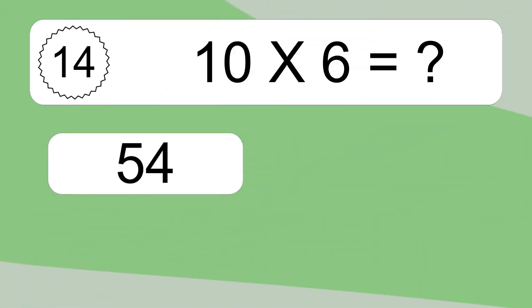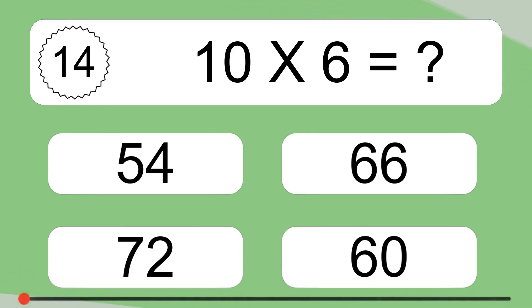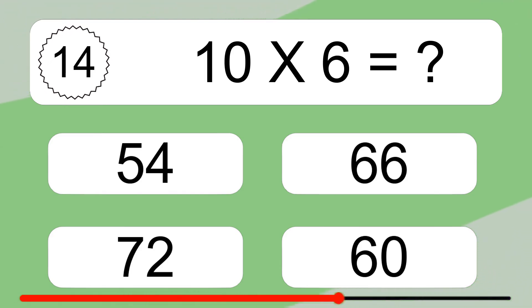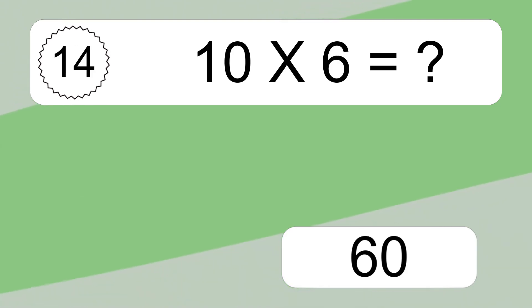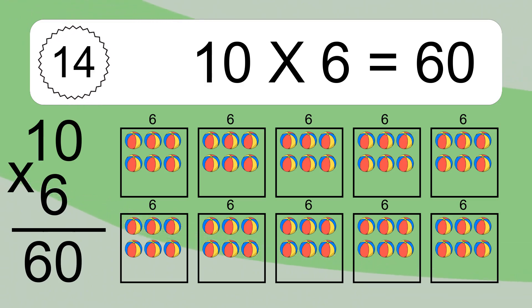10 times 6 equals what? 10 times 6 equals 60. We have 10 boxes and each box has 6 colorful balls inside. If you count all the balls in all the boxes together, you will have 10 times 6 balls. This equals 60 balls.